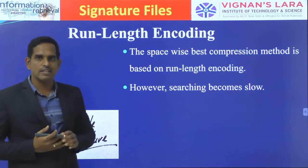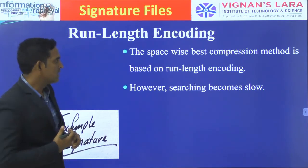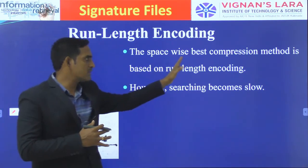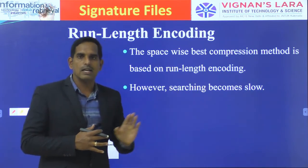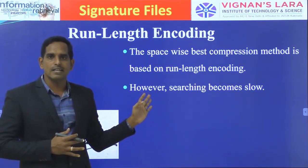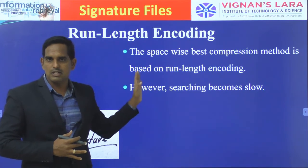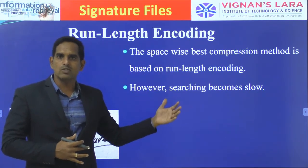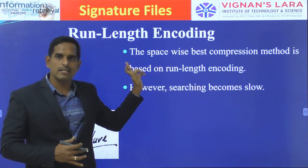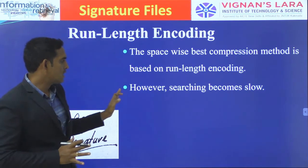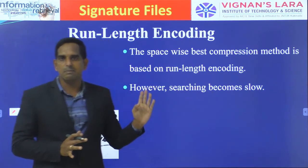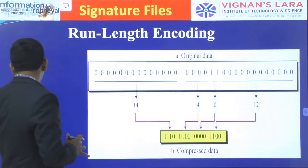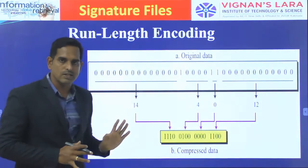The simplest compression method is run-length encoding. The space-based version compression method is based on run-length encoding. Among these compression techniques, run-length encoding provides the best space overhead — it takes the least space. However, searching will be very slow with run-length encoding.